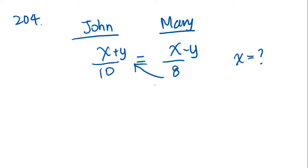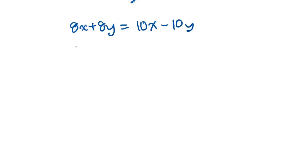First thing we want to do is cross multiply, and we get 8X plus 8Y equals 10X minus 10Y. Now we solve for X by moving the Y to the left side of the equal sign and the 8X to the right, and we get 18Y equals 2X.